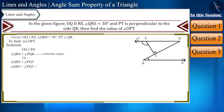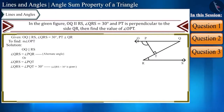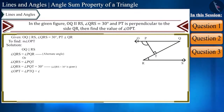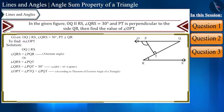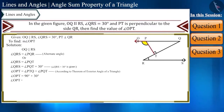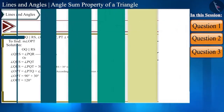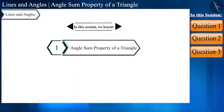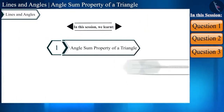Using the theorem of exterior angle of a triangle, angle OPT equals angle PTQ plus angle PQT. Since PT is perpendicular to QR, angle PTQ equals 90 degrees. Therefore angle OPT equals 90 plus 30, which equals 120 degrees. This is our final answer: angle OPT equals 120 degrees.